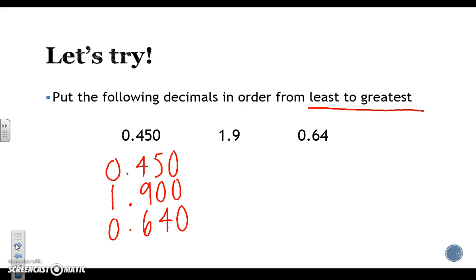We now start again at the very left and we work our way right. Let's start at the ones place. I have a zero, a one, and a zero. We know that a one is bigger than the two zeros. So that is going to be our greatest decimal. So I'm going to put it over here on the right since we're going from least to greatest. We've finished that one. We still have two more to figure out which is the smallest between these three and which one belongs in the middle.